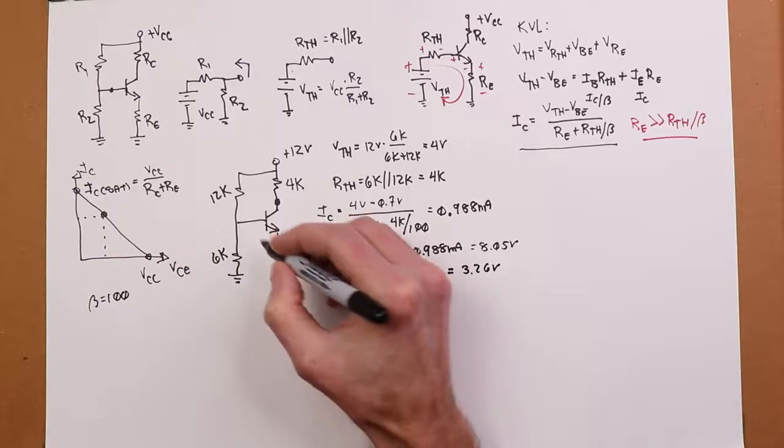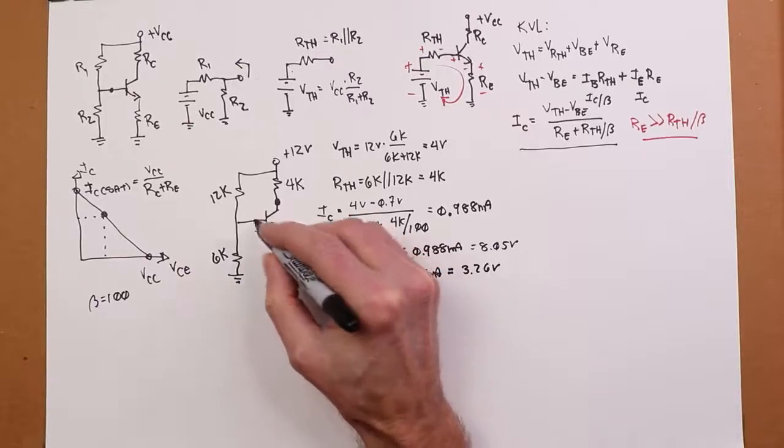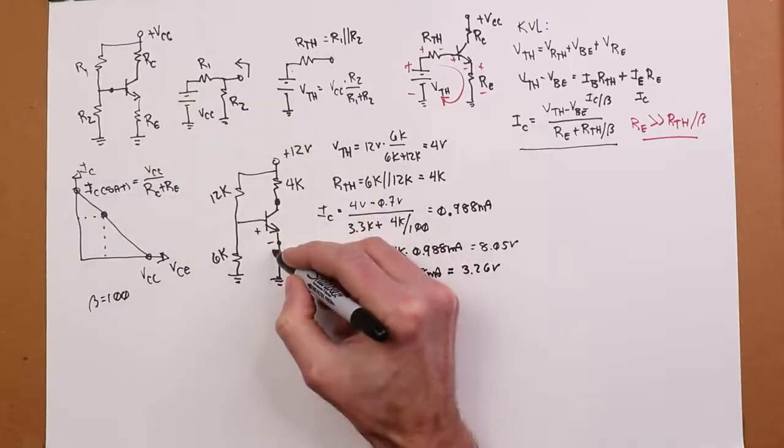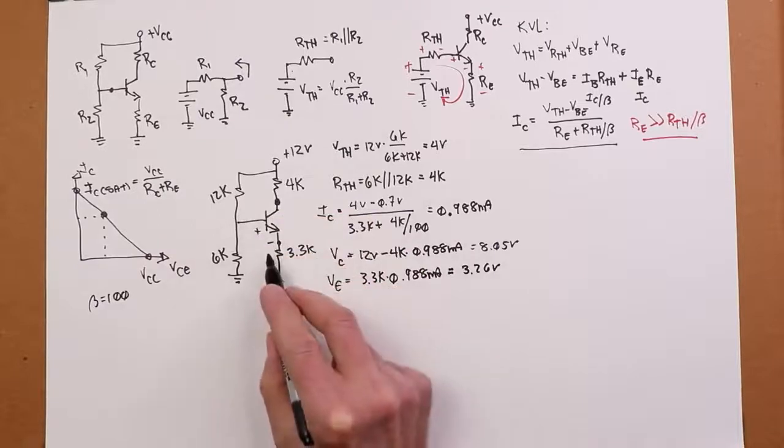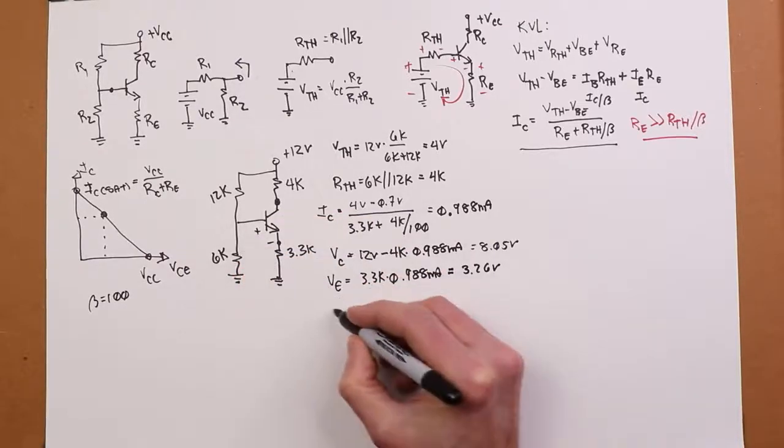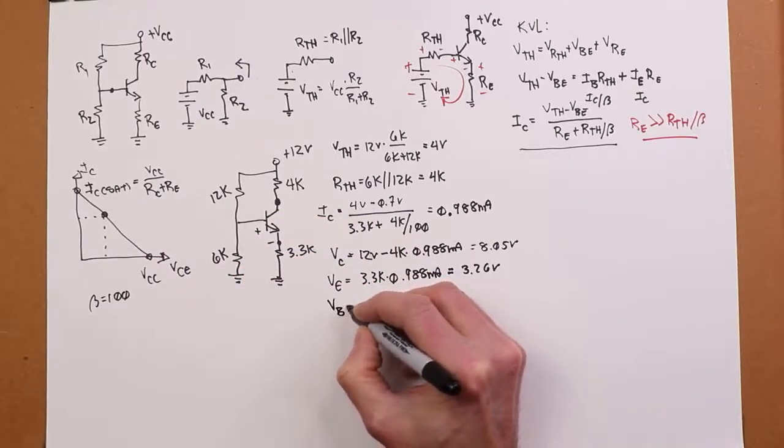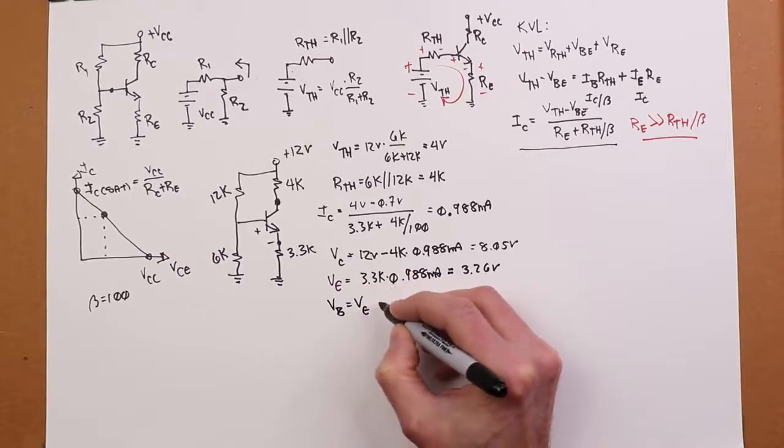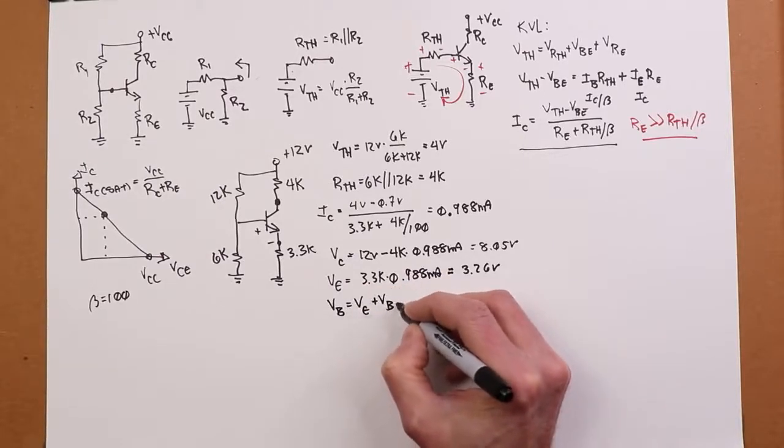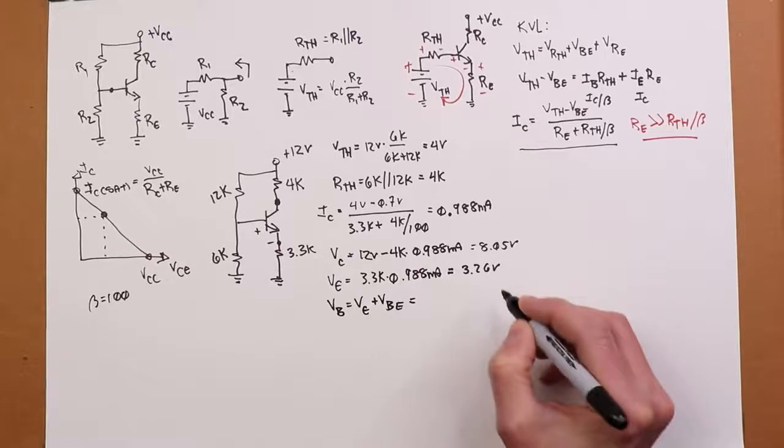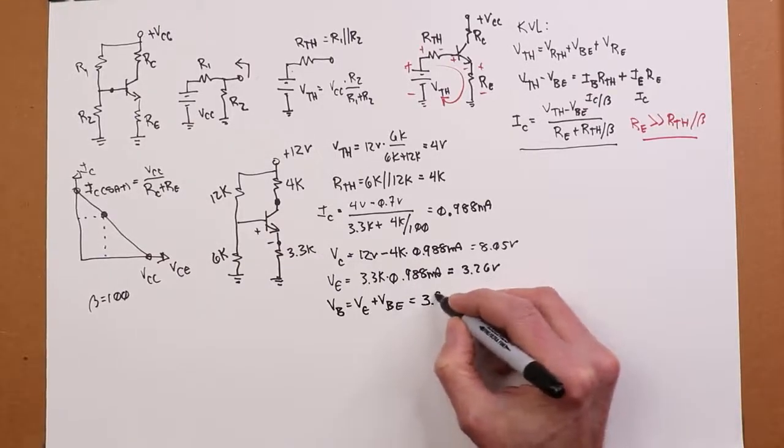If I want to find VB, that's easy enough. I know there's a 7 tenths of a volt drop, so I can just go up minus to plus. Emitter to base is minus to plus. Go up that 0.7. So, 0.7 more than this, that's going to be 3.96 volts.